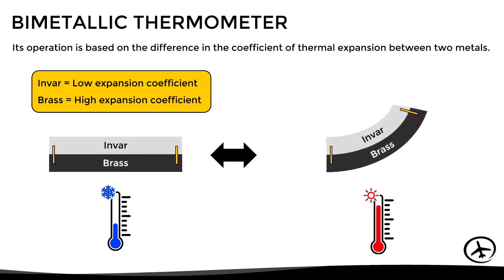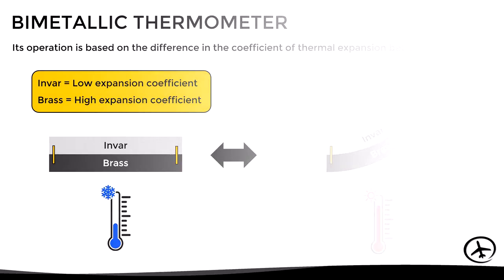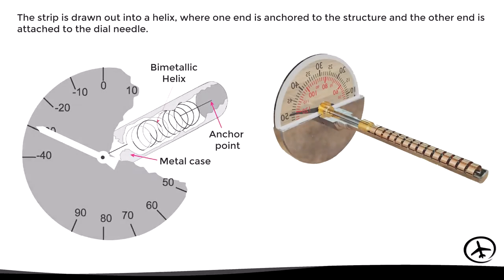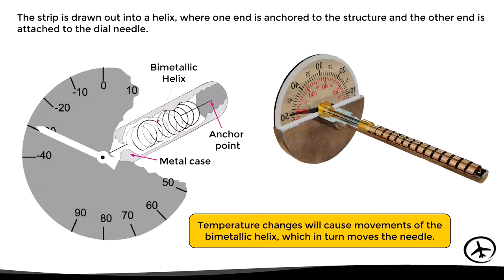In practice, these strips are welded together so that as the brass expands more than the invar, the whole piece will bend. This way, the strip is drawn out into a helix inside a metal case, where one end is anchored to the structure and the other end is attached to the needle. Temperature changes will cause movements of the bimetallic helix, which in turn will move the needle to indicate the current temperature.